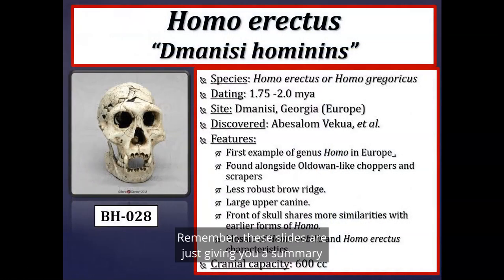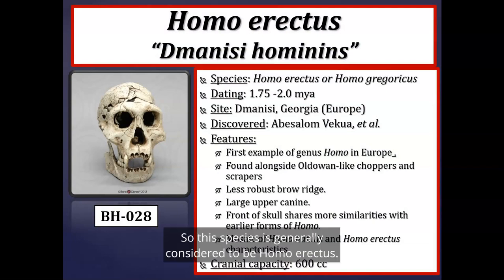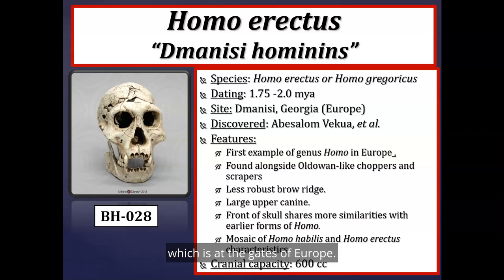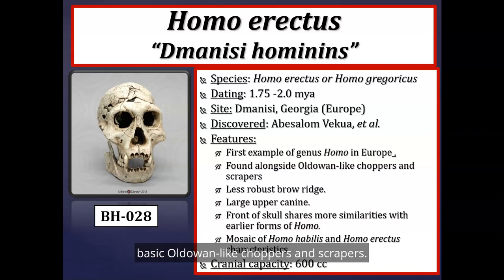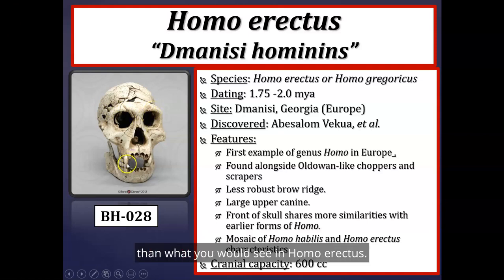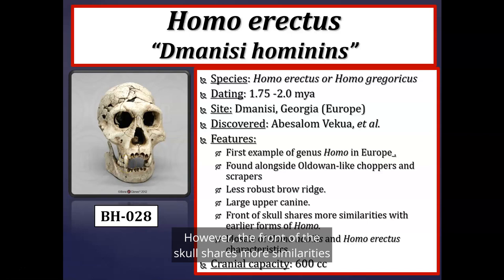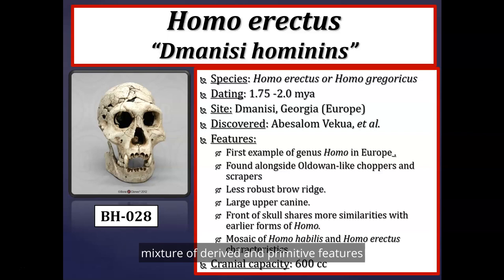Here's a summary slide for the Dmanisi fossils. This species is generally considered Homo erectus, dating between 1.75 to 2 million years ago, from the site of Dmanisi, Georgia — at the gates of Europe. These are the first examples of genus Homo out of Africa. Found alongside basic Oldowan-like choppers and scrapers, the brow ridge is slightly less robust than other Homo erectus, the canine slightly larger, and the front of the skull shares more similarities with earlier genus Homo. Overall, you see a mosaic — a mixture of Homo habilis and Homo erectus-like features.